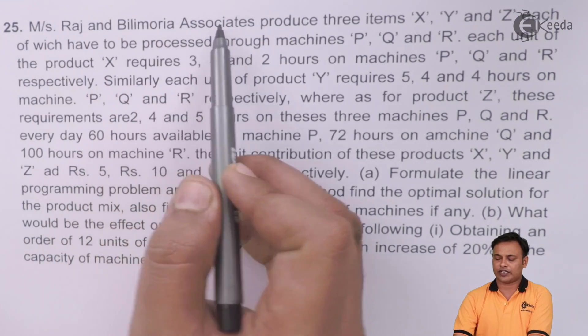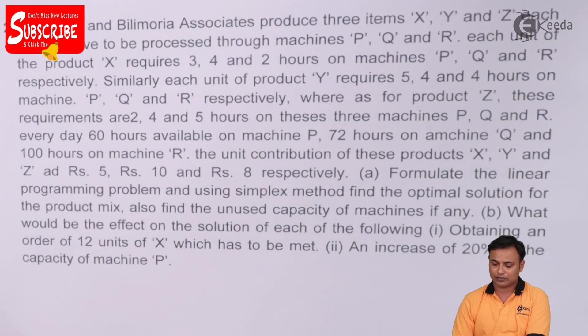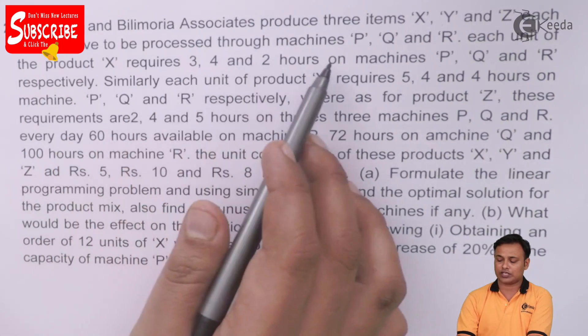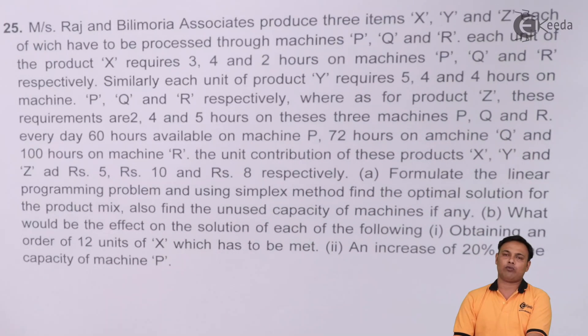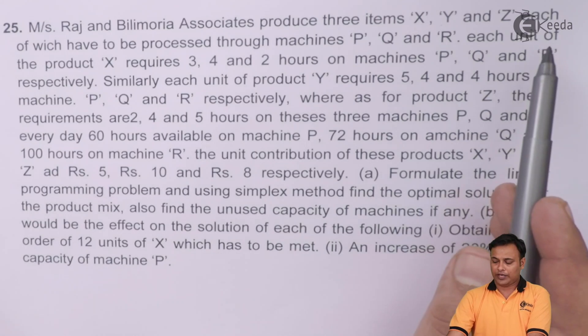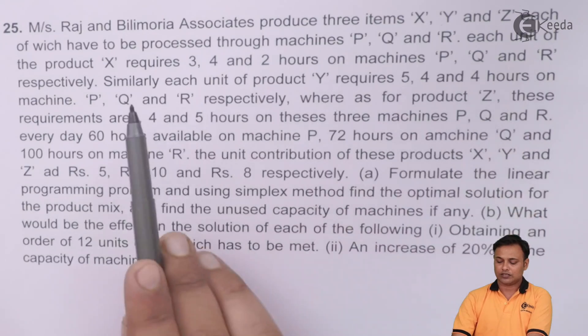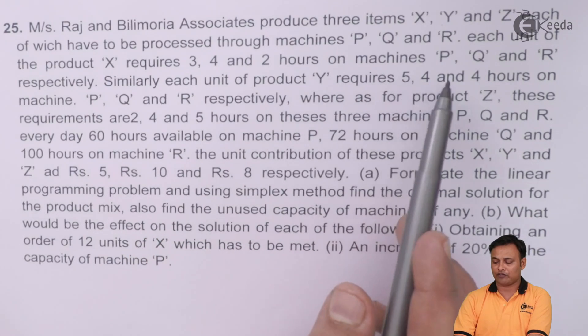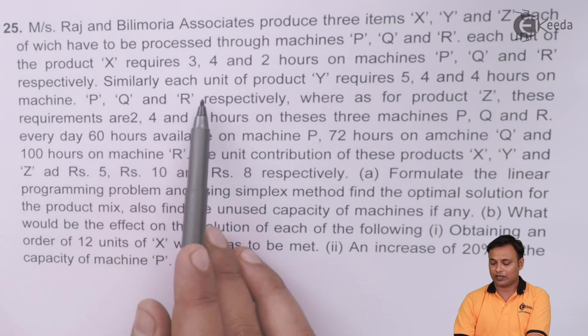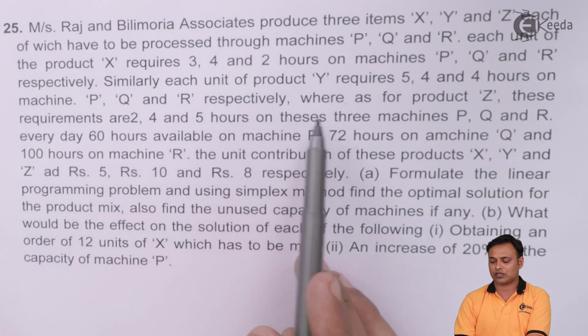Mrs. Raj and Bilimoria Associates produce three items X, Y and Z. There are three different products X, Y and Z which have to be processed through machines P, Q and R. So P, Q and R are the three different resources which are used to manufacture three different products X, Y and Z. Each unit of X requires 3, 4 and 2 hours on machine P, Q and R. Similarly each unit of Y requires 5, 4 and 4 hours on machine P, Q and R whereas for product Z these requirements are 2, 4 and 5 hours on these three machines P, Q and R.